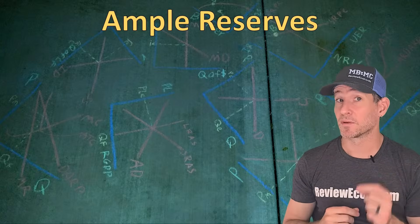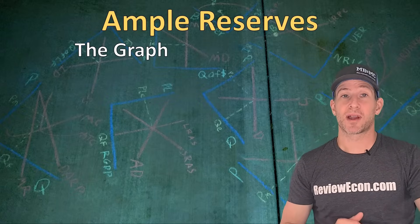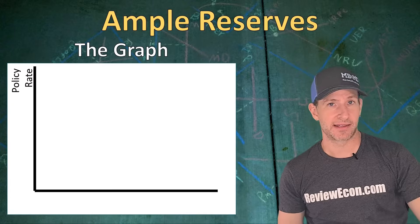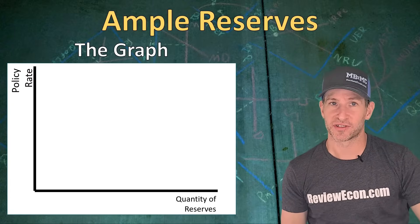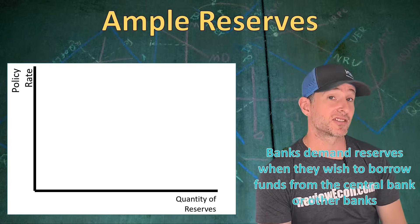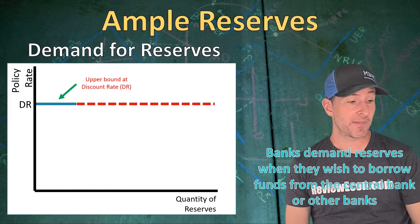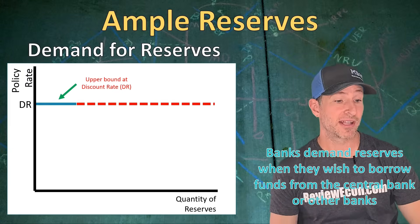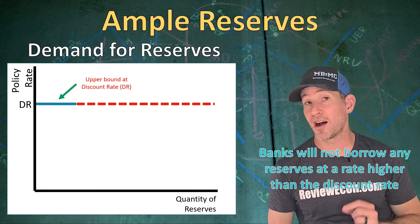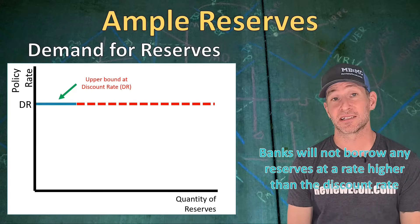Now we're going to talk about the new ample reserve system used in the United States and other countries with ample reserves. On the reserves market graph, the y-axis has the policy rate and the x-axis has the quantity of reserves. Banks demand reserves when they wish to borrow funds from the central bank or other banks. The demand curve is flat at the top — called the upper bound — at the discount rate, because banks will not borrow at any rate above the discount rate since that's the rate they can borrow directly from the Federal Reserve.